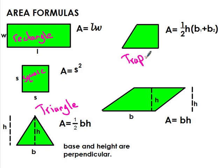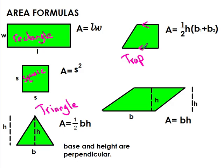Here's our trapezoid — one half times the height times base one plus base two. When we figure out what the base is, the base is the two sides that are parallel to each other. Parallel means they're never going to intersect. These two sides with the little arrows represent parallel — here's base one, here's base two. Your height, just like the triangle, always goes straight up from a base. And then your parallelogram is just base times height.